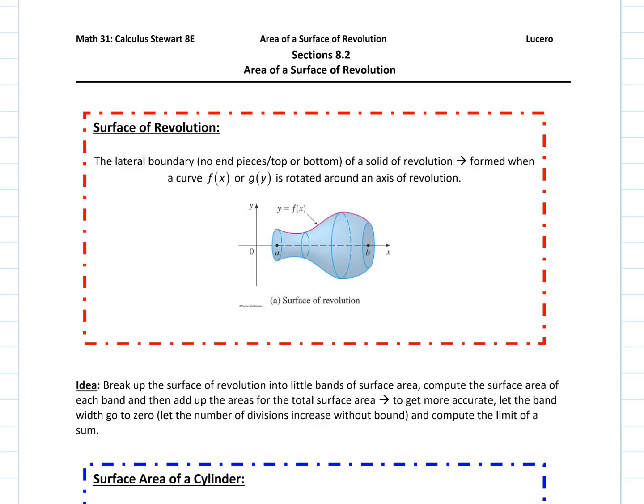Instead of looking at volumes now, what would be the surface area of that solid of revolution? To be specific, when we talk about surface area, we are only going to be talking about the lateral boundary — just the surface area excluding the actual end pieces of this solid.